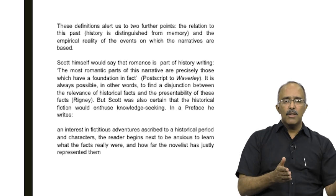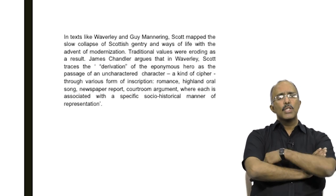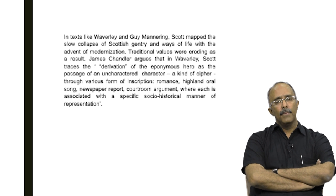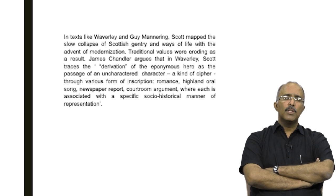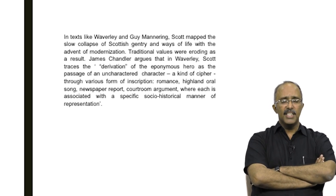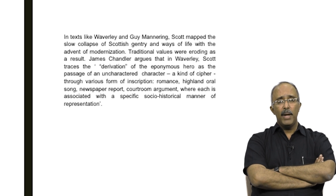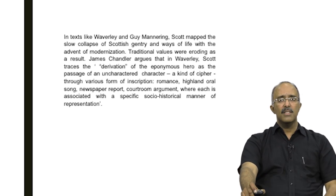To find a disjunction between the relevance of historical facts and the presentability of these facts. In texts like Waverley and Guy Mannering, Scott mapped the slow collapse of Scottish gentry, their ways of life with the advent of modernization and industrial culture. Traditional values were eroding as a result. James Chandler, the distinguished critic who wrote England 1819, where he articulated the idea of a romantic historicism, has argued that in Waverley, Scott traces the derivation of the eponymous hero as a passage of an unchartered character — a kind of cipher — through various forms of inscription: romance, high line, oral song, newspaper report, courtroom argument, etc.